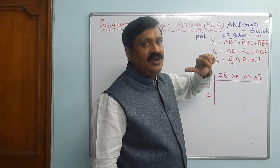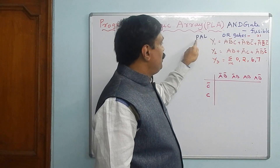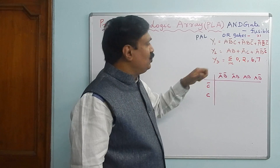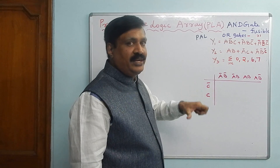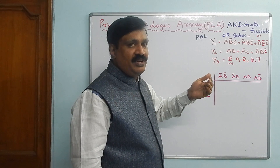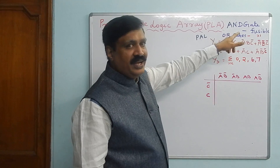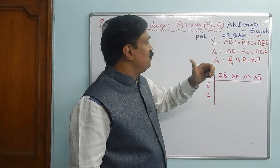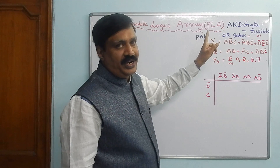That means any OR-gate can be connected to any AND-gate. In PAL, the first three AND-gates are connected to one OR-gate, the second three AND-gates to another OR-gate, and the third three — seven, eight, nine — are connected to the third OR-gate. Here in PLA, any OR-gate can be connected to any AND-gate. That is the difference between PLA architecture and PAL architecture.